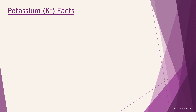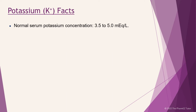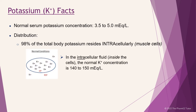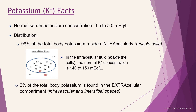Some basic facts about potassium. The normal potassium concentration in the serum is maintained within a narrow range of 3.5 to 5 MEQs per liter. Potassium is a major intracellular cation. Roughly 98% of total body potassium exists inside the cell, predominantly in muscle cells. In the intracellular fluid, the normal potassium concentration is 140 to 150 MEQs per liter. The sodium-potassium pump actively transports sodium and potassium across the cell membrane and maintains this gradient. Only 2% is found in the extracellular compartment, intravascular and interstitial spaces.